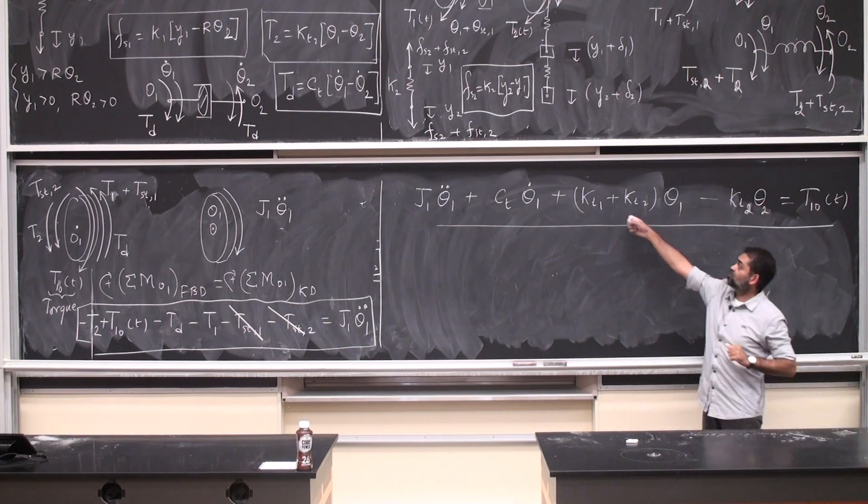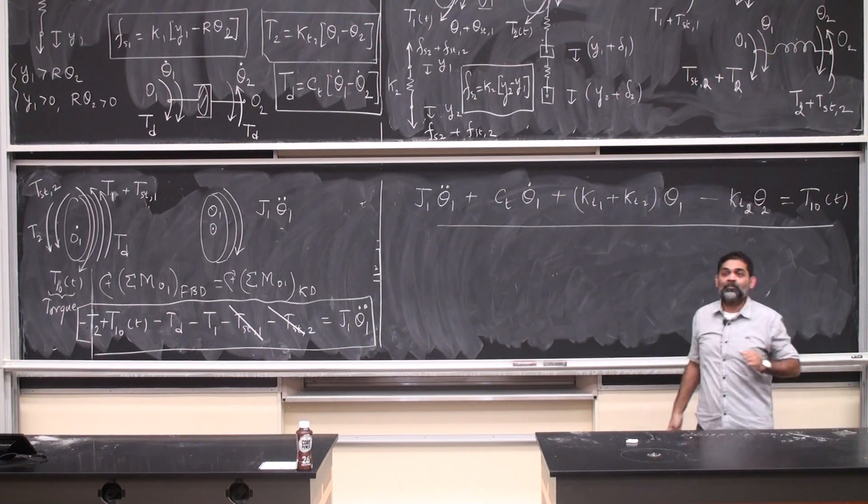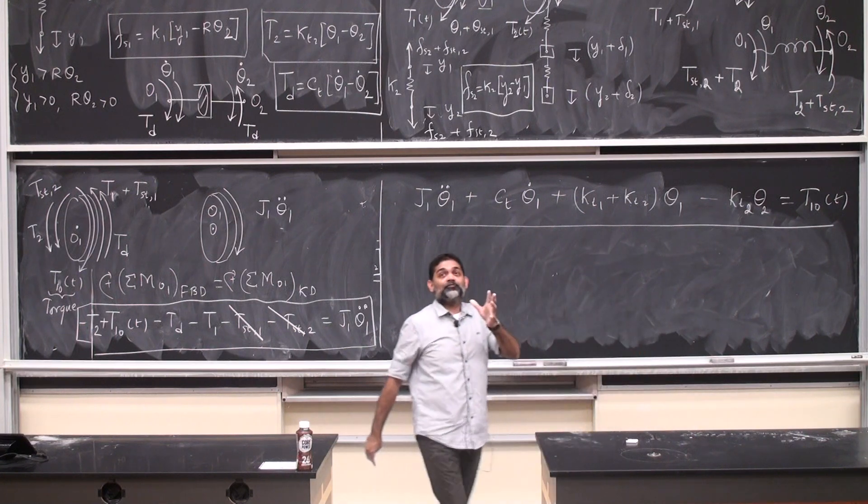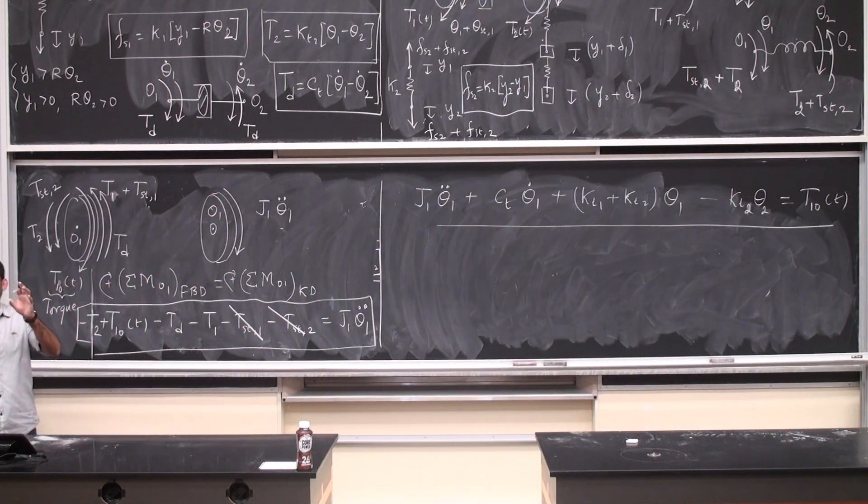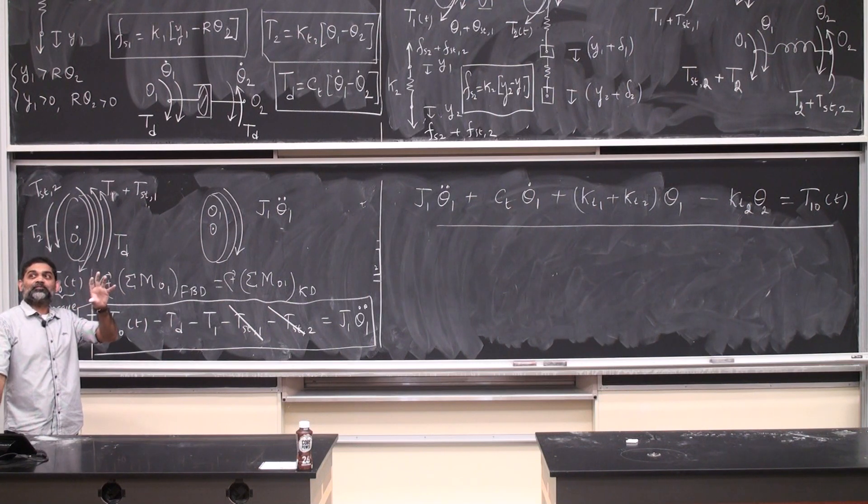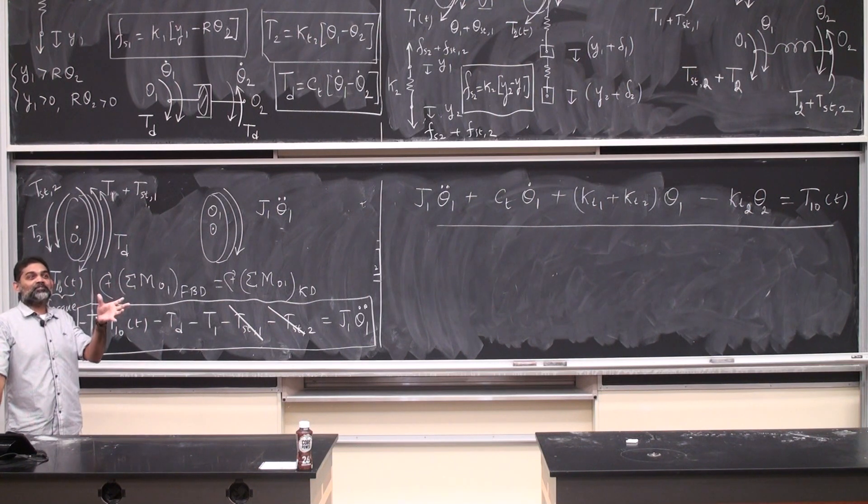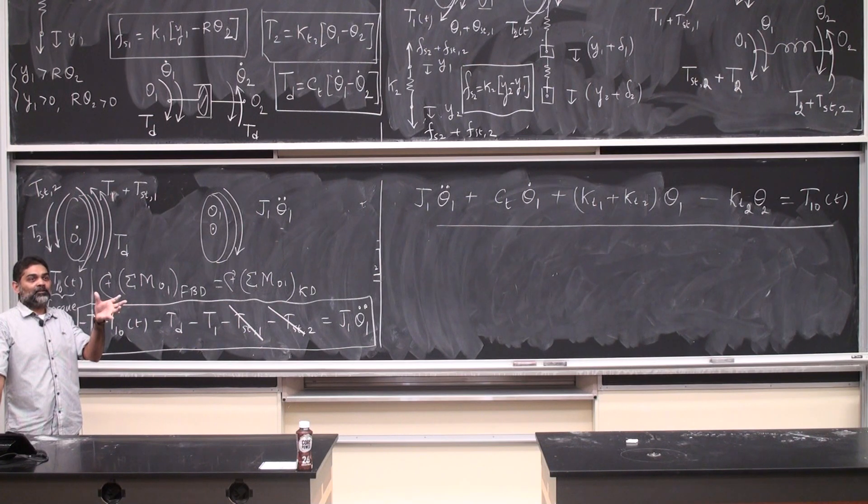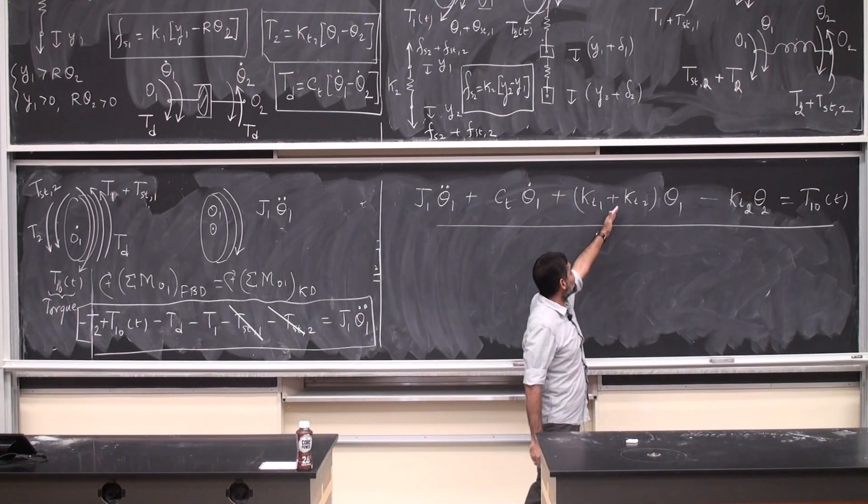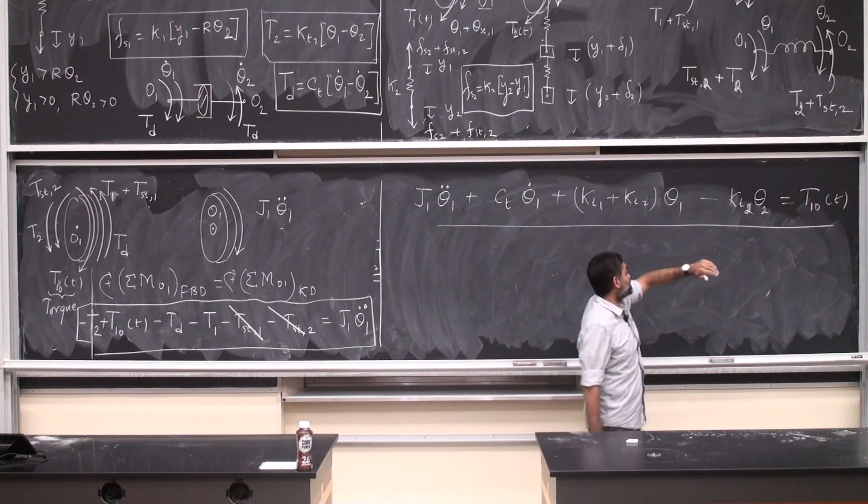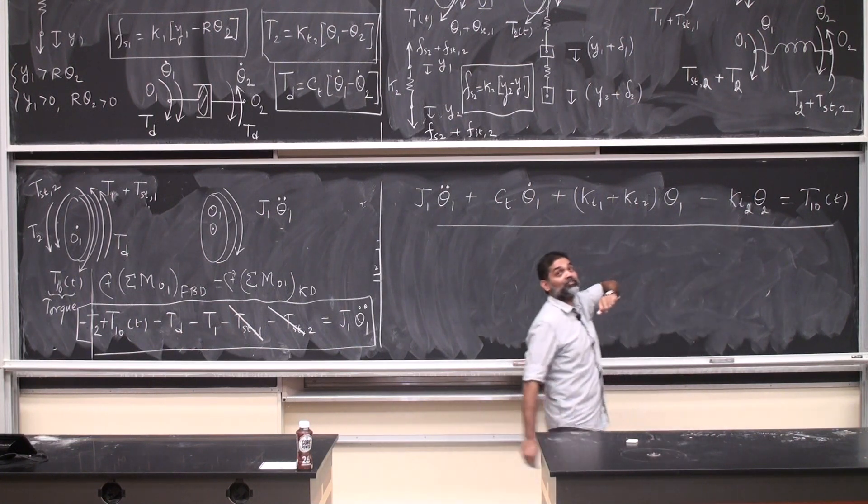One thing I want to mention, you see this situation here, k t1 plus k t2, it acts as if those two springs are in series, because at the point of connection, those two springs are subjected to the same angular displacement which is theta 1. So if you can think of it, you can think of it as springs in series, but also beware, there is a contribution from the rotation of theta 2.